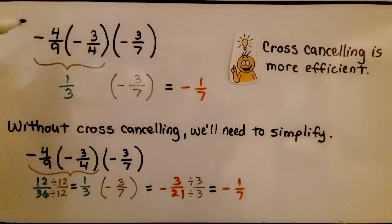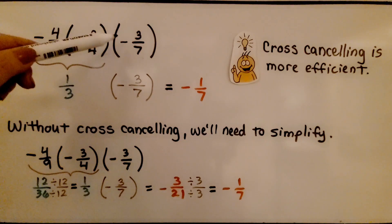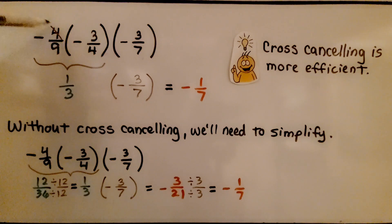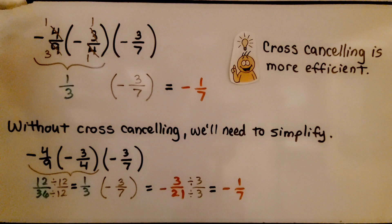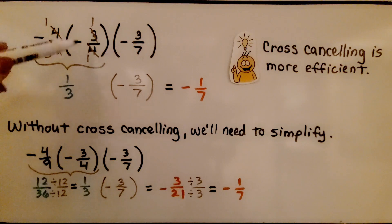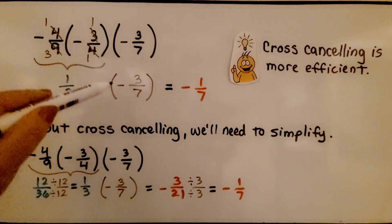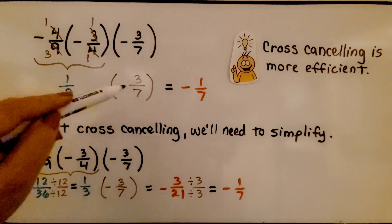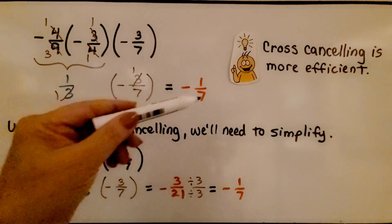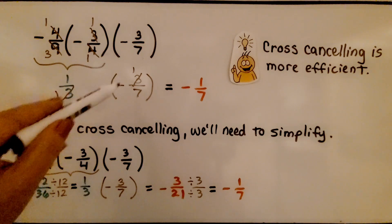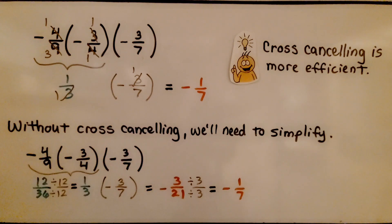Let's try another one: negative four-ninths times negative three-fourths times negative three-sevenths. Right away I can see we have one four here and one four there — four is a common factor. Here we have one three and nine is three threes, so we cross-cancel. That gives us one times one is one and three times one is three — same signs, so positive one-third. Now multiply by negative three-sevenths: one three here and one three there cancel, giving one over seven. Positive times negative means unlike signs — it's negative one-seventh. Cross-canceling is more efficient.